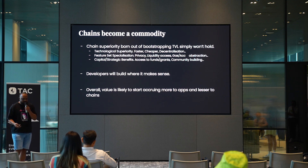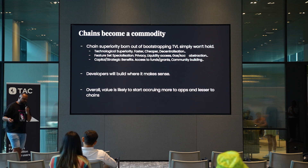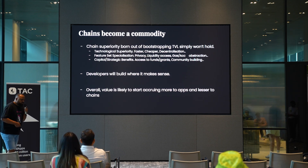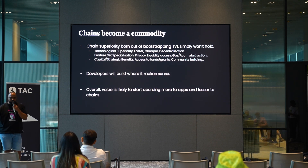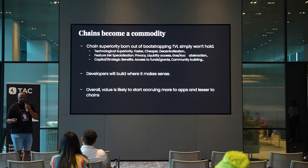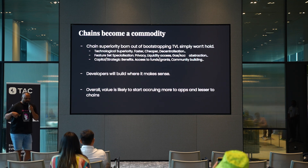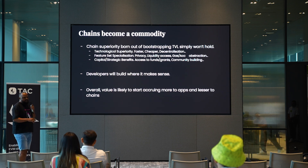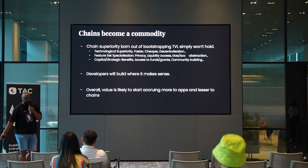Because if you don't specialize, you're really not going to make it. Specialization means things like technological superiority — being faster, cheaper, more decentralized — to attract users and developers. You need feature set specialization, like privacy by design or providing a different way of unlocking new liquidity. Or you provide capital or strategic benefits: help people bootstrap communities, give access to large networks, or just throw money at them. Developers will now start to build where it makes sense for them — where they can meet their technological and business needs. Everything else becomes completely unnecessary. And essentially, overall, value starts to accrue more on the app layer and less on the chain layer. We're going to see this transition where users interacting with chains transforms into users interacting with apps, and apps interacting with chains — and that is probably the better way for this ecosystem to evolve, where users are not directly linked to chains and chains themselves move into the background.